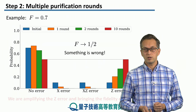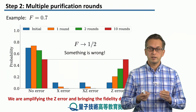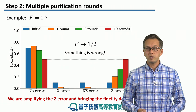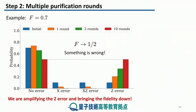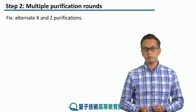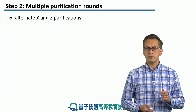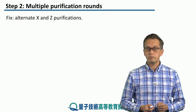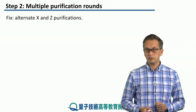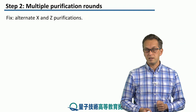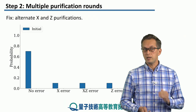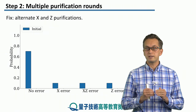So what went wrong? The problem is that by only running the x purification circuit, we are suppressing the xz errors but amplifying the z error. How do we take care of this problem? We can alternate the x and z purifications. We saw in the previous step that the z purification circuit is a little bit different and is supposed to detect z errors.